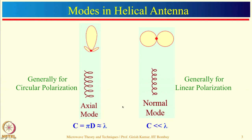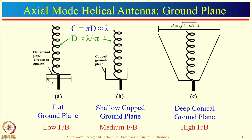In axial mode, the helical antenna radiates in the direction of the helix axis, and radiation is maximum in that direction. It is generally designed for circular polarization. Since we want the radiation in the axial direction, we need to have a ground plane. For C = pi*d ≈ lambda, the diameter is equal to lambda/pi, and the ground plane dimension should be at least three-fourths of lambda to reduce back radiation.